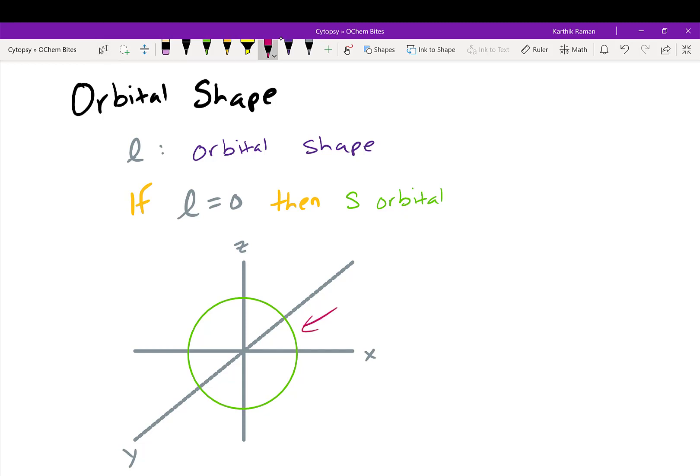What this means is, imagine you put the protons and the neutrons in the middle between the x, y, and z axis. And the S orbital is this sphere, which tells you that this electron can be anywhere within that sphere with 95% probability.